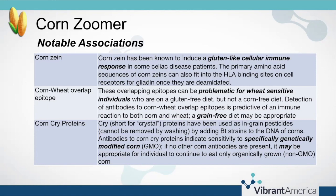In both cases with corn zein and corn-wheat overlap epitope, perhaps a grain-free diet would be more appropriate, unless individuals find that they do okay tolerating rice, buckwheat, millet, or other gluten-free grains.